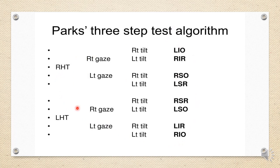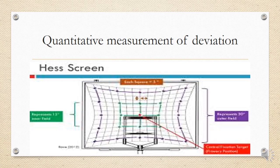A simplified algorithm: right hypertropia increasing on left gaze and left tilt indicates left superior rectus palsy. Left hypertropia increasing on right gaze and left tilt indicates left superior oblique palsy. Right hypertropia increasing on left gaze and right tilt indicates right superior oblique palsy. This algorithm allows quick identification of the paralyzed muscle without drawing diagrams.